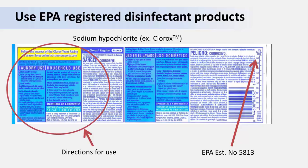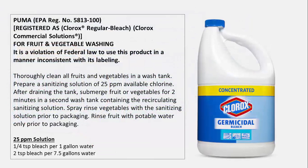Directions for use are usually clearly printed on the label or a supplemental label document. Here's a closer look at the label for a Clorox germicidal product. You can see the EPA number as well as specific directions for washing fruits and vegetables. In this case, the directions say to add the produce into water containing 25 parts per million of the sanitizer and allow it to stay submerged for two minutes. Remember, it's a violation of federal law to use a product in a manner different than what the label indicates.